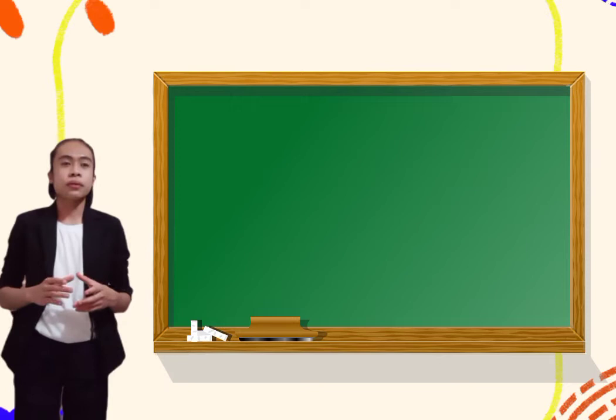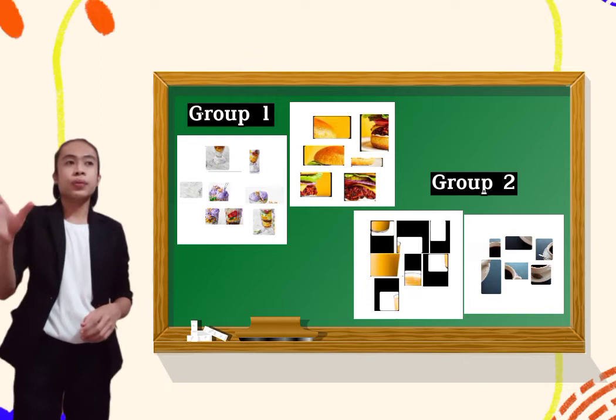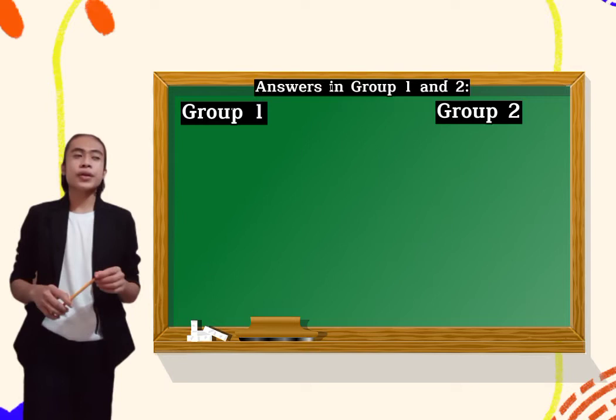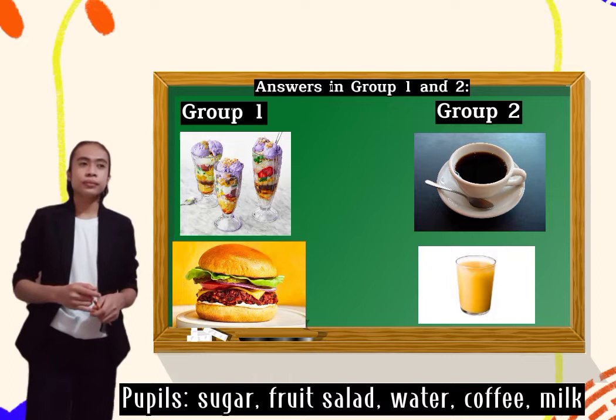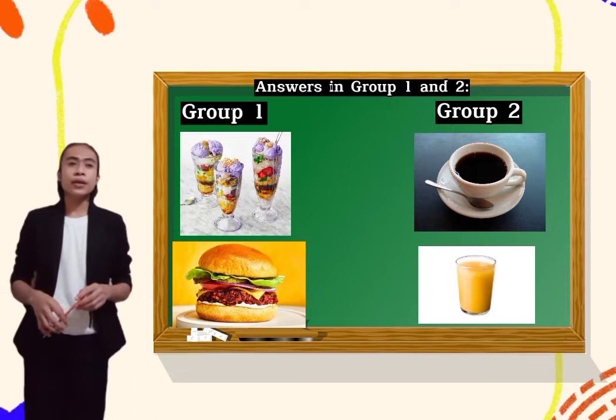Okay, class, we have a group activity. I will give you some rumbled pictures that you are going to arrange and identify what is in the picture. I will group you into two groups. This side is group 1, and this side is group 2. Okay, is it clear? Okay, very good. What are the mixtures found in our surrounding class? Okay. Yes, correct. Very good. Now, let's go back to these two groups.